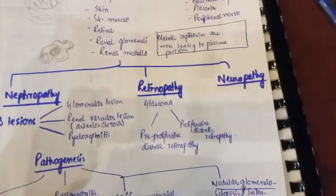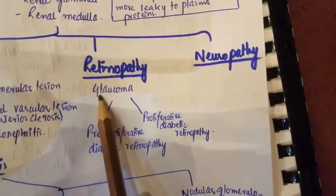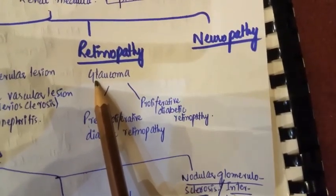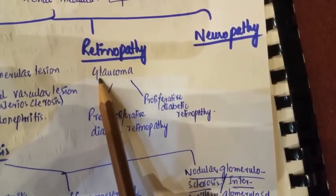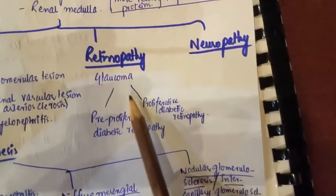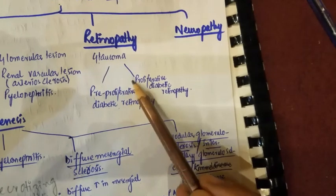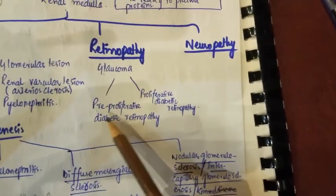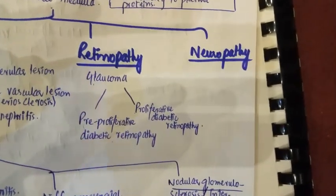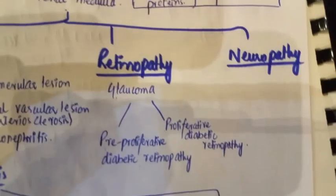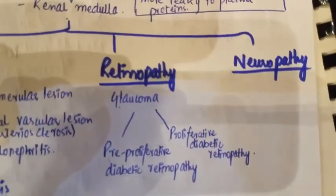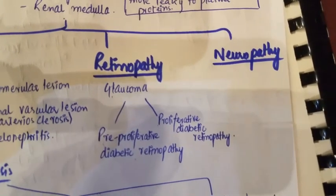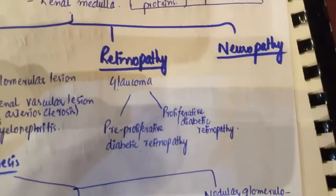The other pathologies include retinopathy, which can result in glaucoma. Diabetic-induced hyperglycemia also leads to acquired opacification of the lens, known as cataract. Retinopathy is further classified into pre-proliferative diabetic retinopathy and proliferative diabetic retinopathy. Due to diabetic neuropathy, patients are unable to feel peripheral sensations, which results in injuries that can lead to amputations.